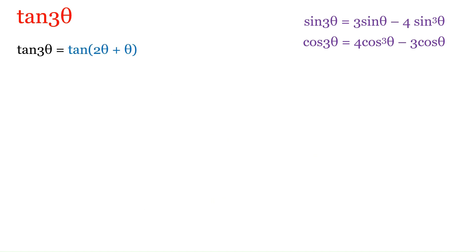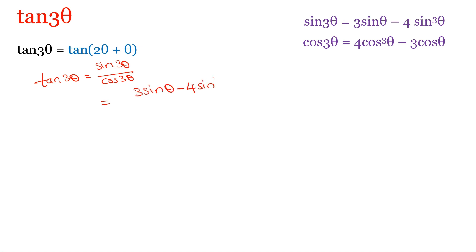Now that we know the formulas for sin 3θ and cos 3θ, we will derive tan 3θ. We can use tan 3θ = sin 3θ / cos 3θ. The value of sin 3θ is 3 sin θ − 4 sin³θ, divided by the value of cos 3θ which is 4 cos³θ − 3 cos θ.